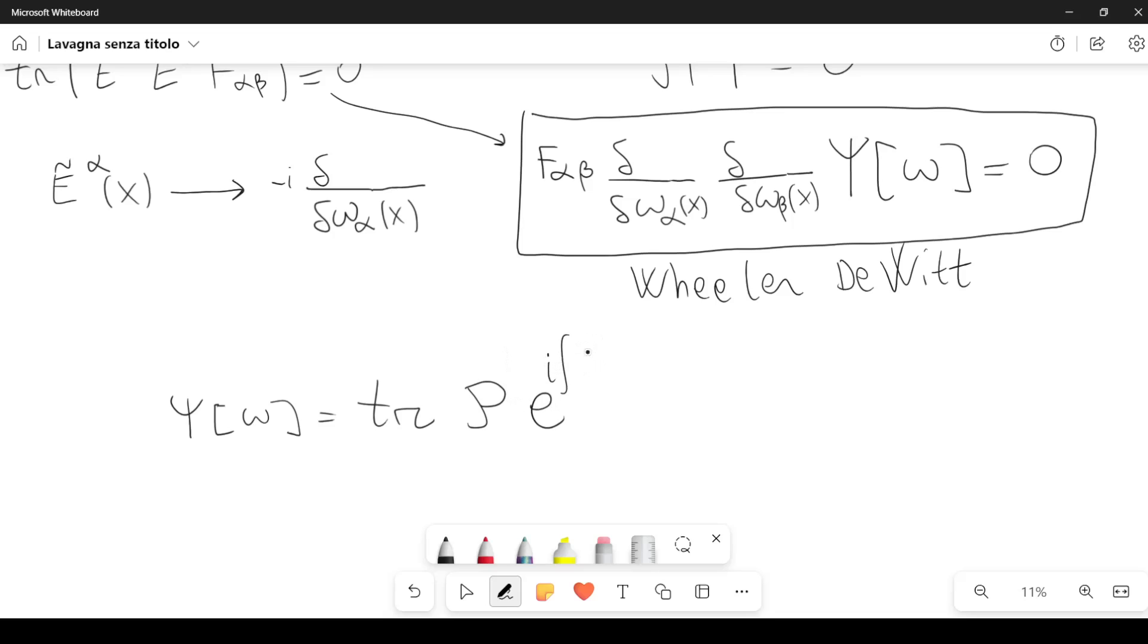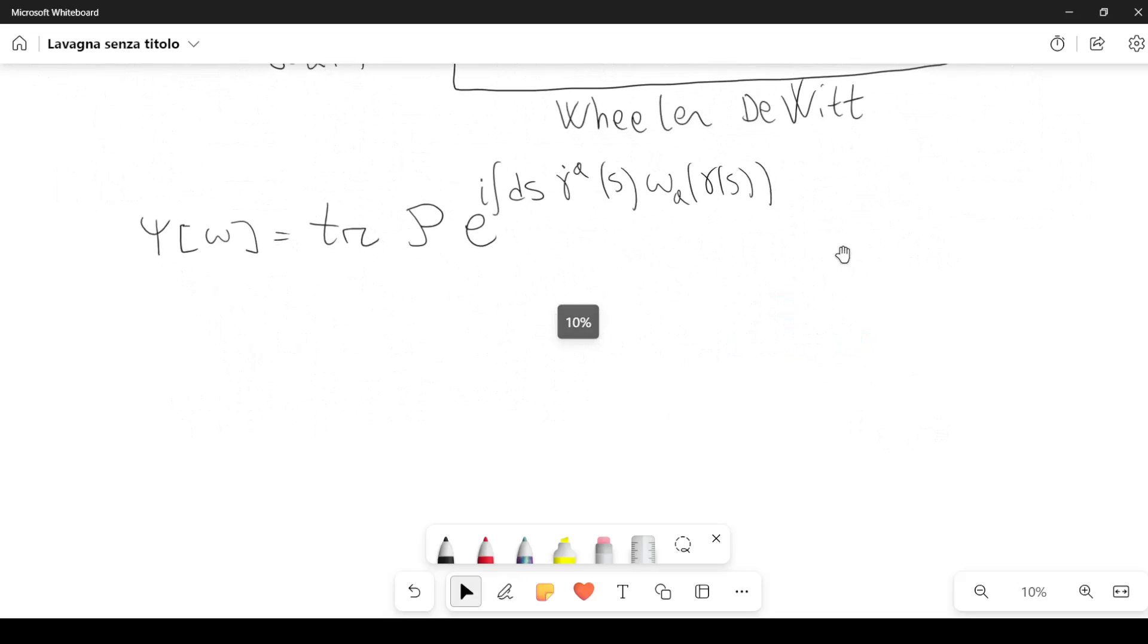So we have a path ordering of the exponential integral. We have also i here. Then we integrate it over ds gamma dot a of s omega a of gamma of s. And now if we consider the derivative, the functional derivative of this expression with respect to omega beta of x of psi of omega,